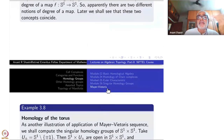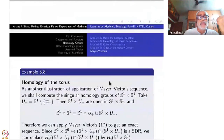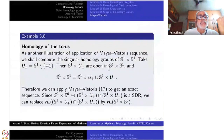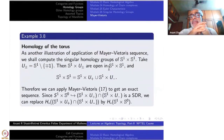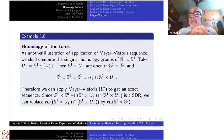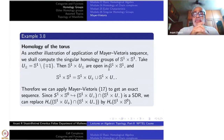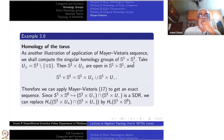Now let us go back to the Mayer-Vietoris sequence and do more computation — this time with the torus. By torus I mean the product S^1 × S^1. To apply the Mayer-Vietoris sequence, just as in the case of S^1, we will break up the second factor S^1 into two open sets U_+ and U_-, where U_+ = S^1 minus {-1} and U_- = S^1 minus {+1}.